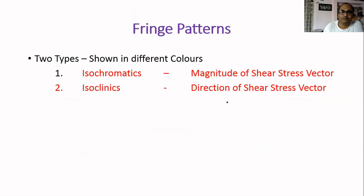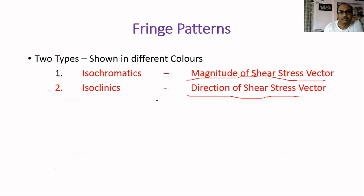There are two types: isochromatic and isoclinic — one gives you magnitude of the shear stress vector and another gives the direction of the shear stress vector.